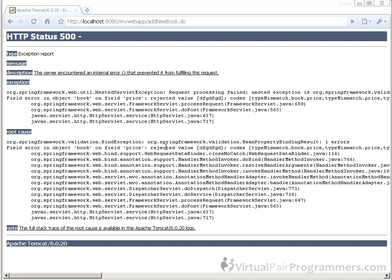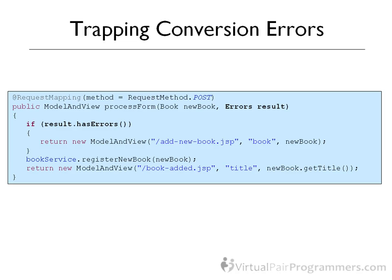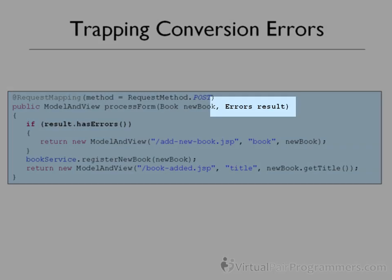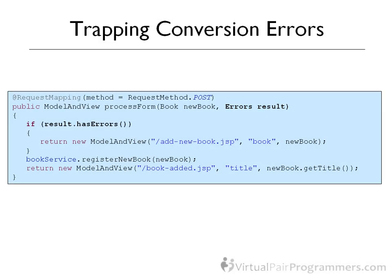What can we do? Let's start by attacking the problem of the price field. We're getting that really hideous crash because Spring is trying to convert the string into a regular Java double. What we need to do is to trap conversion errors, and the way we do it is by adding an additional parameter to the submit method. It's from a class called Errors, which is an object that represents the details of any errors that Spring encountered when converting the form into a backing object.